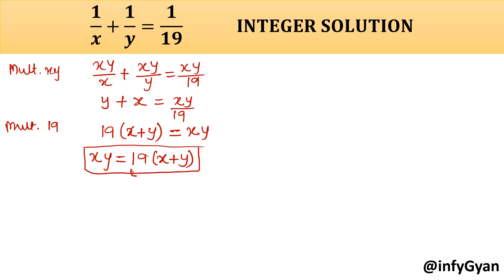Now, as you can see, the right hand side is divisible by 19, so the left hand side will also be divisible by 19. The right hand side has 19 times x plus y, which means x plus y is a multiple of 19, so the left side should also be a multiple of 19. Because of the symmetry in x and y on the left hand side, I am going to write x is equal to 19k.